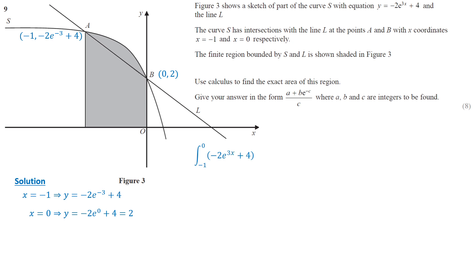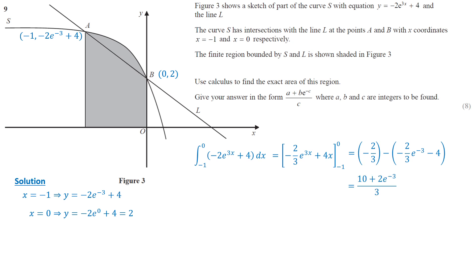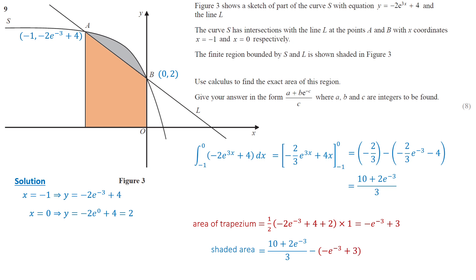The integral of the curve function with respect to x is negative 2 over 3 times e to the 3x plus 4x. Substituting x equals 0 gives negative 2 over 3, and substituting x equals negative 1 gives negative 2 over 3 times e to the negative 3, minus 4. Simplifying, we have (10 plus 2e to the negative 3) divided by 3. A trapezium is formed between line segment AB and the x-axis. The area of the trapezium is half times (negative 2e to the negative 3 plus 4 plus 2) times 1, which simplifies to negative e to the negative 3 plus 3. The area of the shaded region is the area under the curve minus the area of the trapezium, giving the exact area as (1 plus 5e to the negative 3) divided by 3.